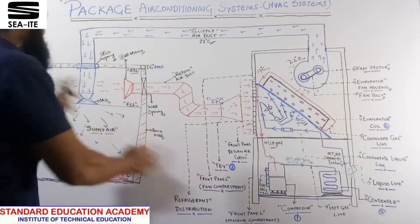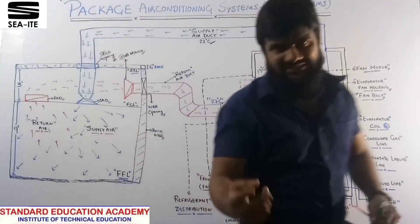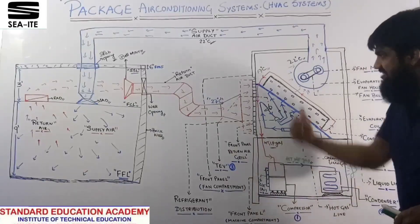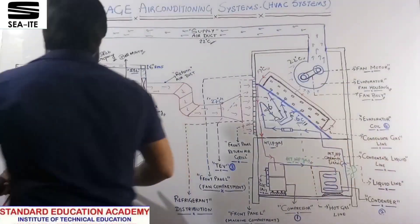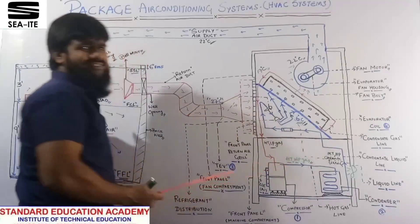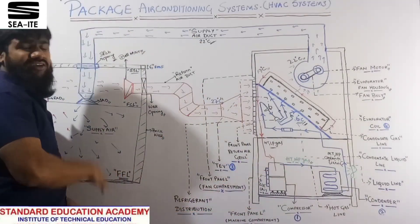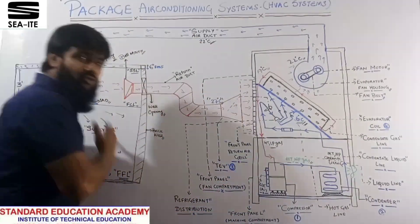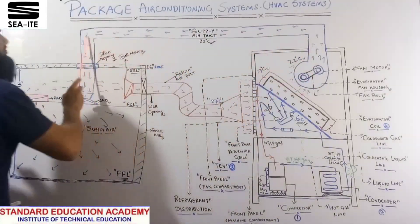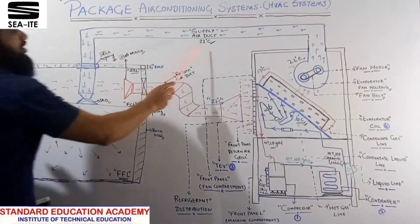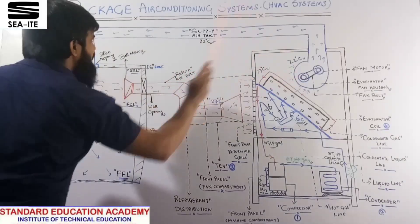Now let's move to the air cycle. In this system we have two cycles — one is the refrigeration cycle which I have explained, and the next is the air cycle. The air cycle is simply: supply air goes from the machine to the room, and return air comes from the room back to the machine. Air is transferred to your room at 22°C with the help of the blower.